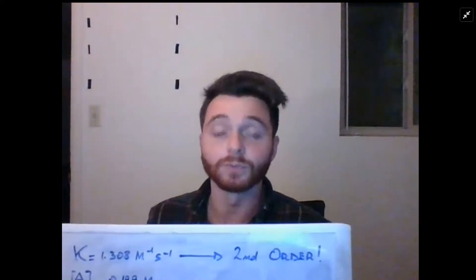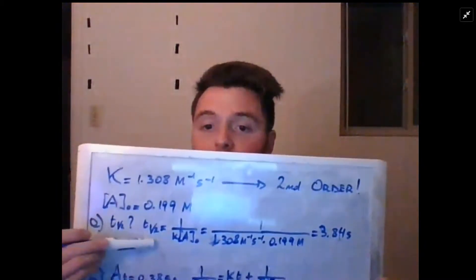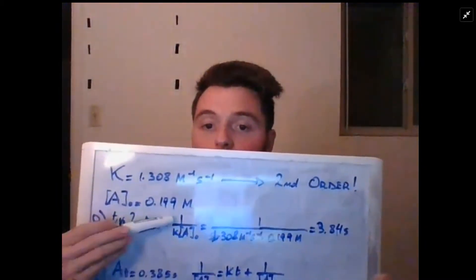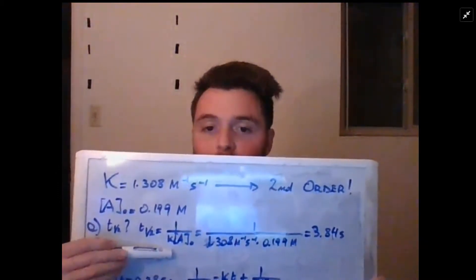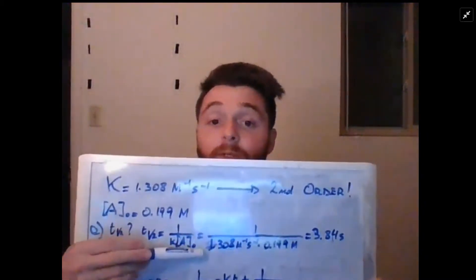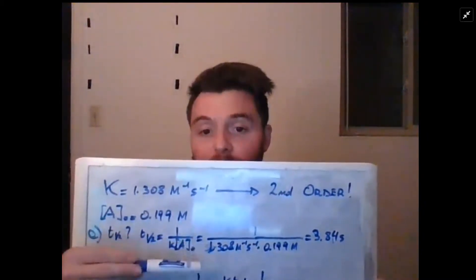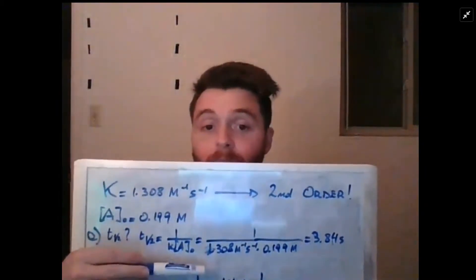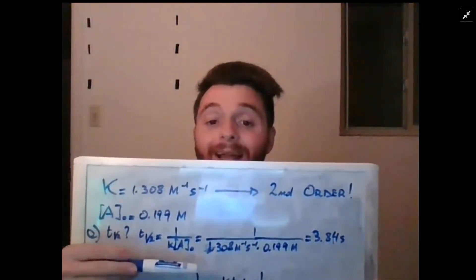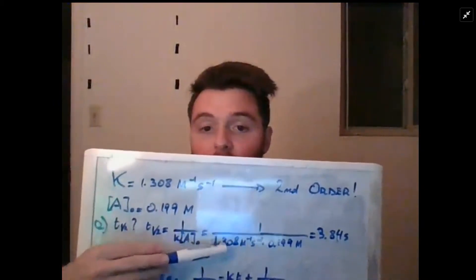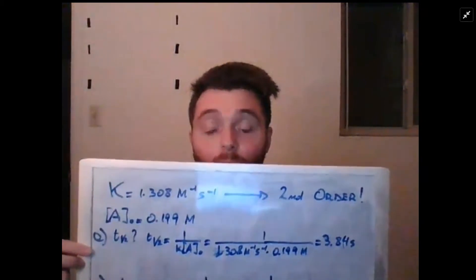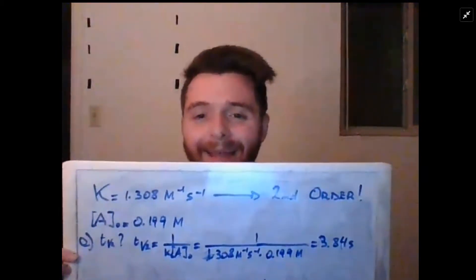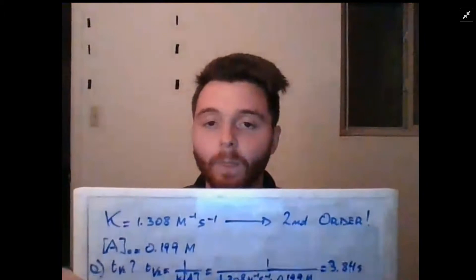The first question is to determine the half-life of this reaction. We know from a second-order reaction the half-life is equal to one over k times the initial concentration. So we do one over 1.308 inverse molar times inverse seconds, times 0.199 molar. The units for inverse molar and molar cancel out, and we get 3.84 seconds.